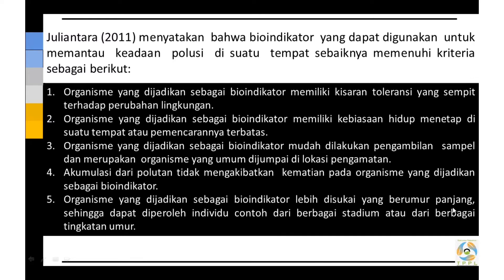Kemudian, organisme yang dijadikan sebagai bioindikator lebih disukai yang berumur panjang, artinya siklus hidupnya panjang, mulai dari juvenil, muda, dewasa, sampai dengan mijah. Sehingga dapat diperoleh individu contoh dari berbagai stadium, yaitu dari juvenil, muda, dewasa, atau dari berbagai tingkatan umur.